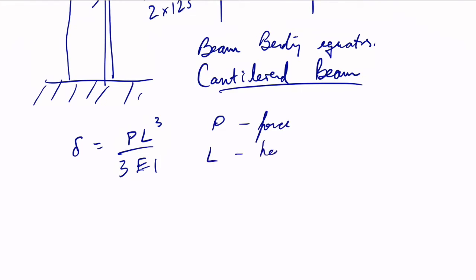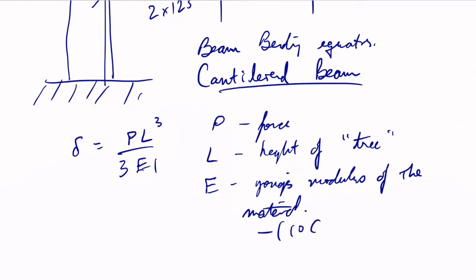P is the force. L is the height of the tree. E is a material constant, Young's modulus. I'm going to assume it's about 10 gigapascals, and I'm switching units here. I do like metric better. And then I is the moment of inertia.